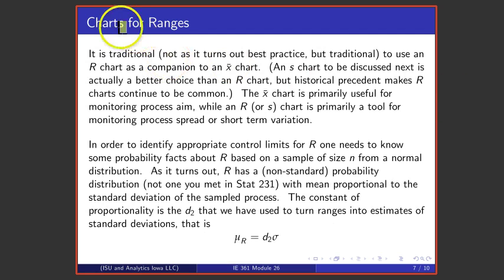In addition to X-bar charts, one can talk about charts for ranges. It's fairly traditional to use an R chart, or a chart for ranges, in addition to an X-bar chart. It's not necessarily the best thing to do; it's what traditionally has been done because ranges are easy to compute. Actually, using an S chart is a better alternative, especially in these days when computation is cheap and there's no problem computing standard deviations. But for purposes of discussing what is traditional, let's look at the range chart, and then we'll take up the S chart in the next module.